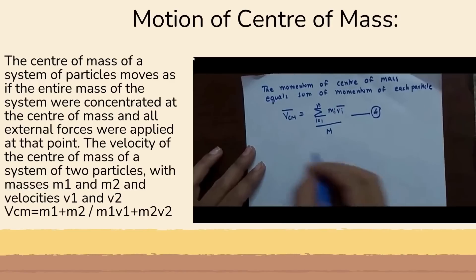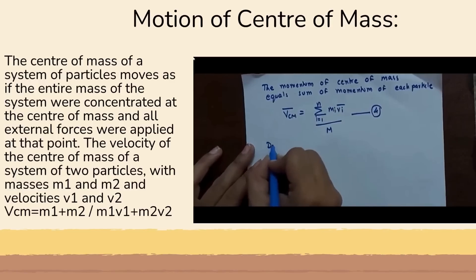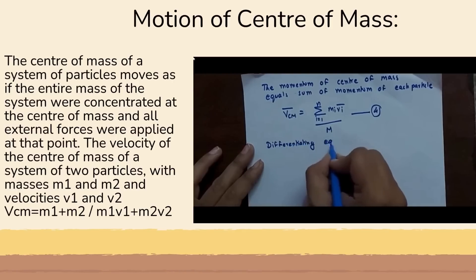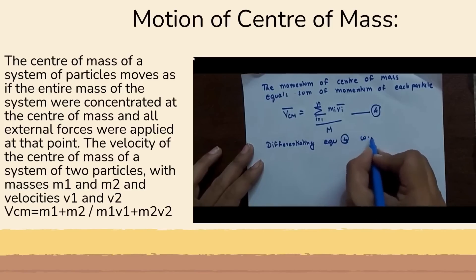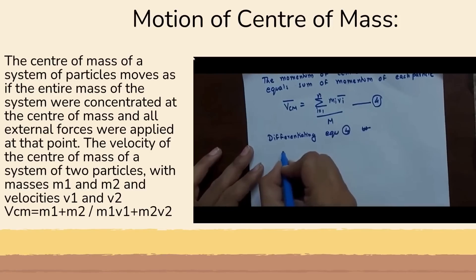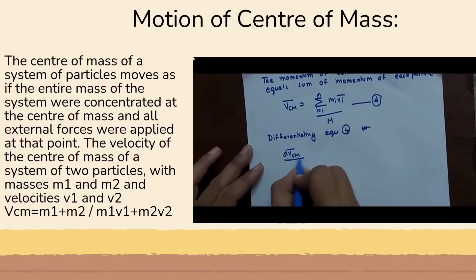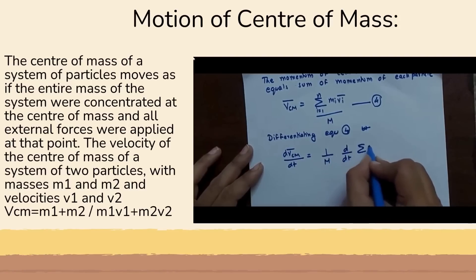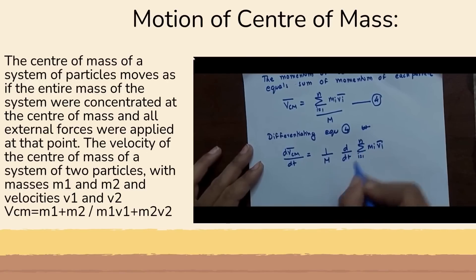Again differentiating equation 4, we get dV_cm/dt = (1/M) · d/dt of (summation of Mi·Vi from i=1 to N). This term represents the acceleration of the center of mass.